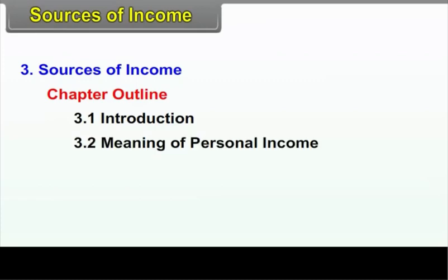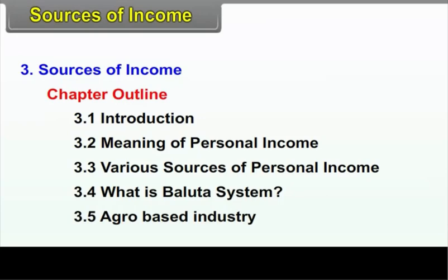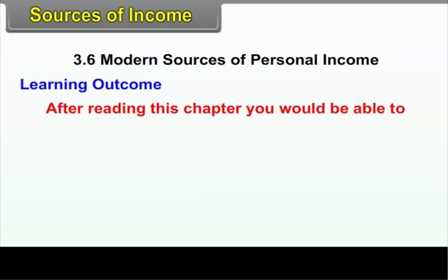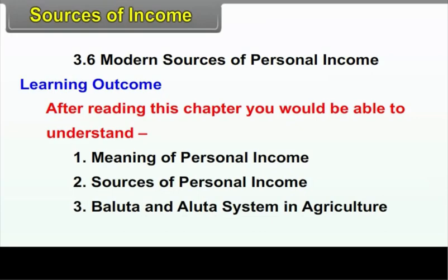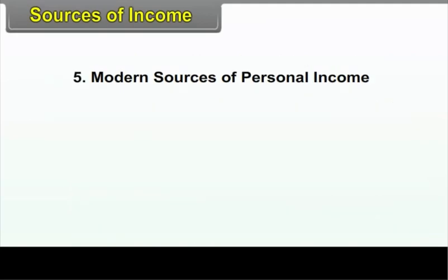Chapter 3: Sources of Income. Chapter Outline: 3.1 Introduction, 3.2 Meaning of Personal Income, 3.3 Various Sources of Personal Income, 3.4 What is Baluta System, 3.5 Agro-Based Industry, 3.6 Modern Sources of Personal Income. Learning Outcome: After reading this chapter, you would be able to understand the meaning of personal income, sources of personal income, Baluta and Aluta system in agriculture, nature of small scale and cottage industry, and modern sources of personal income.